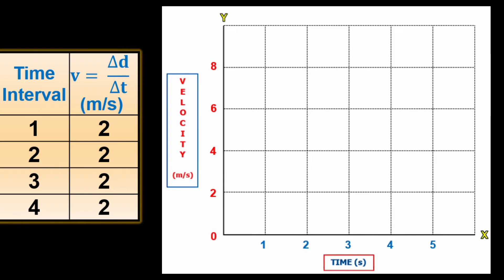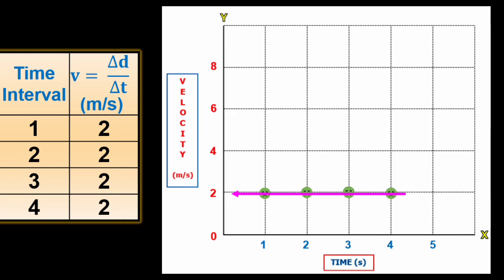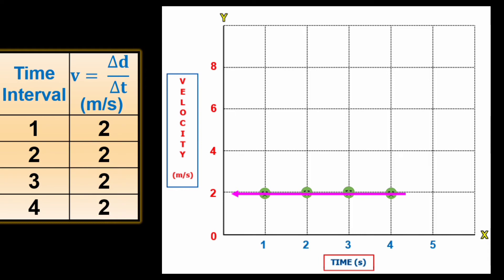To graph the velocity, you still plot points as you did in the distance versus time graph. At 1 second up to 4 seconds, the velocity is still 2 meters per second. Plotting the points where these lines intersect and then connecting them will make a graph that looks different from the DT graph. Notice that in every second interval, the velocity is always the same value — 2 meters per second — meaning it is constant.